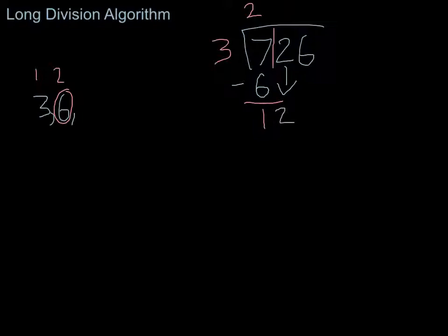This time I'm skip counting by threes to 12. So three, six, nine, 12. And then I count the number of jumps. One, two, three, four. I made four jumps.